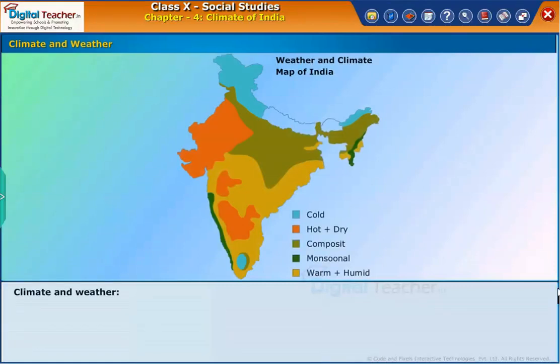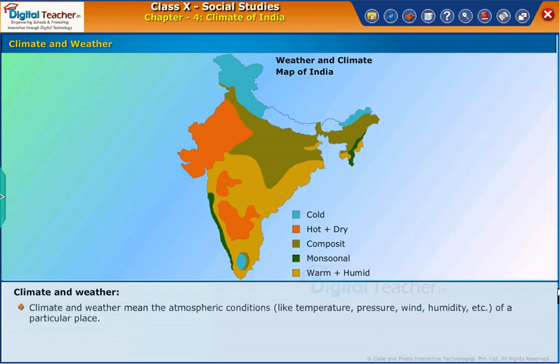Let us learn more about climate and weather. Climate and weather mean the atmospheric conditions like temperature, pressure, wind, humidity, etc. of a particular place.